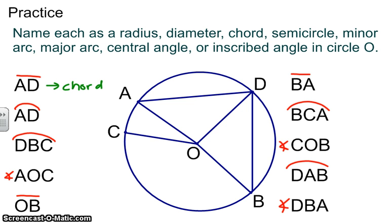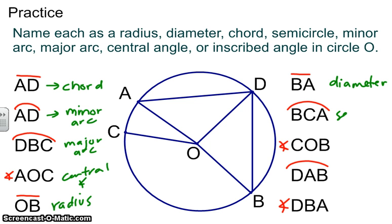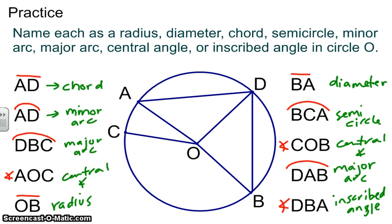The first one is chord. Second one is minor arc. The next one is major arc. The next one is major arc. Central angle. Radius. Diameter. Semicircle. Central angle. Major arc. And the last one, inscribed angle. Bringing back a little bit of review there. Don't want you to get that mixed up with central angle.